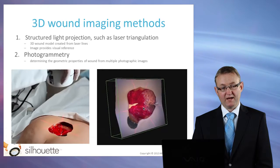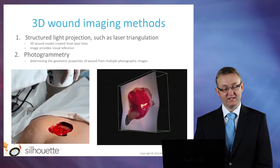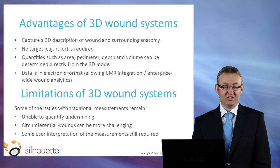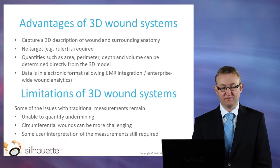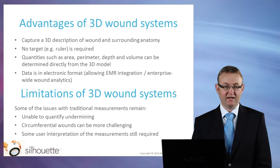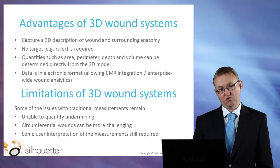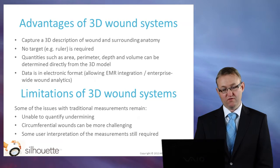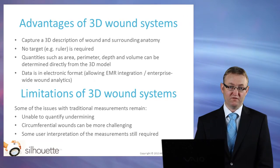So there is a new breed of wound measurement systems that are based on three dimensions, such as structured light, laser triangulation, or techniques based on stereo vision such as photogrammetry. There are a number of advantages of 3D wound measurement systems. First of all, they capture a 3D description of the wound and the surrounding anatomy. Also, there is no target required, so there's no need to worry about the careful placement of a target such as a ruler. Because we have this 3D model of the wound, quantities such as area, perimeter, volume and depth can be derived directly from the 3D model. Data is all in electronic format, so this allows for easy integration into an EMR system, and it can be used elsewhere for data analysis.